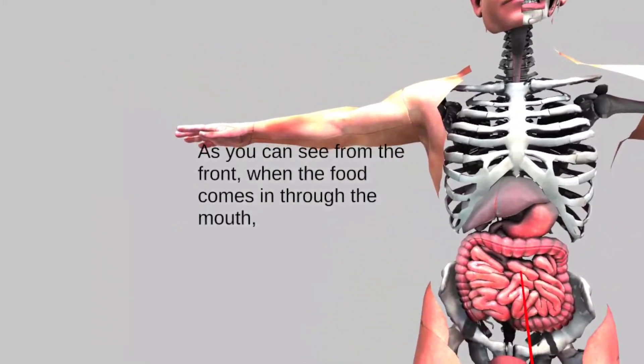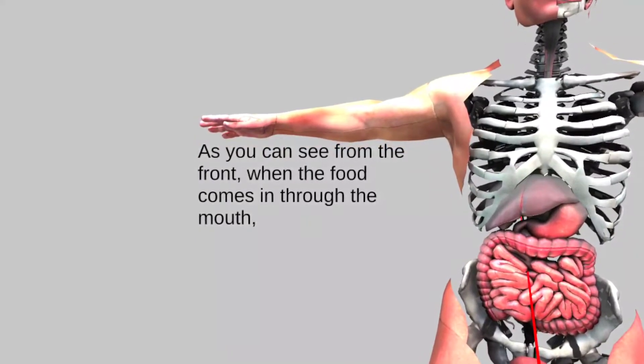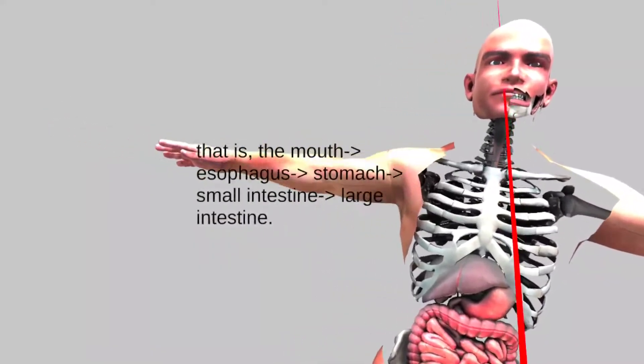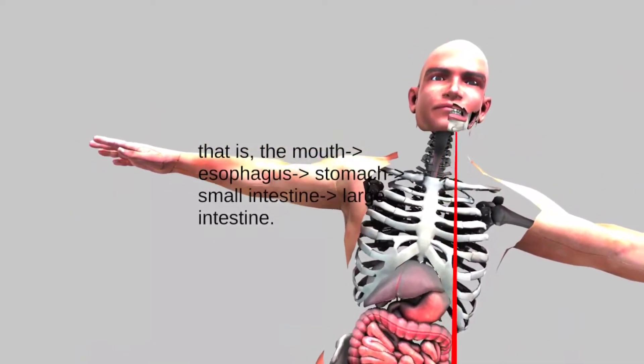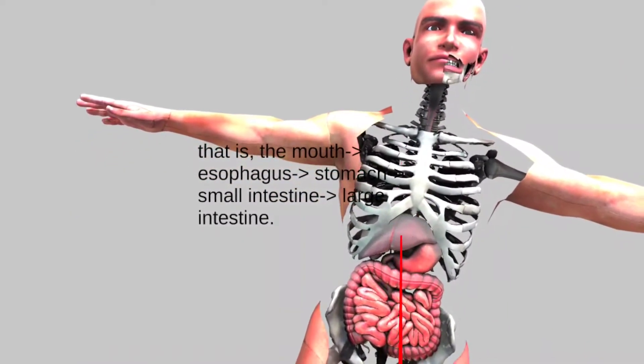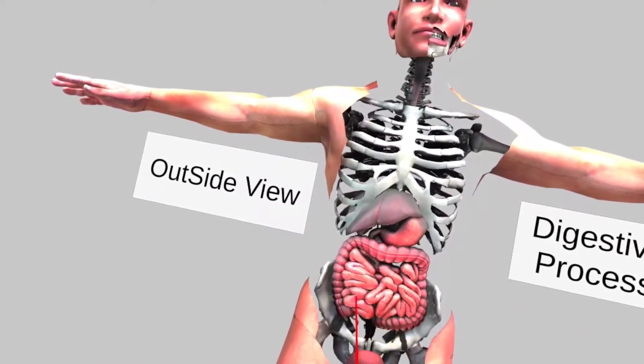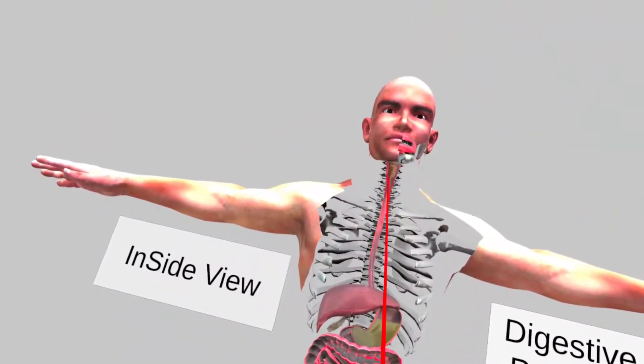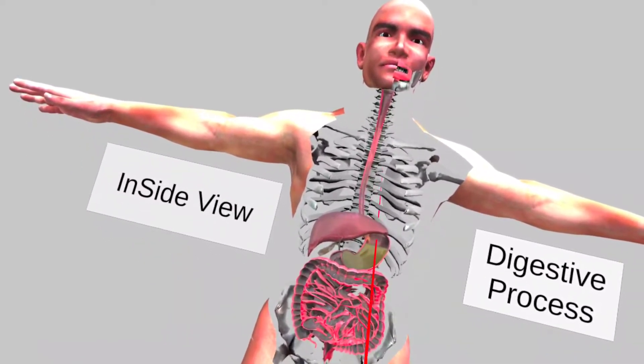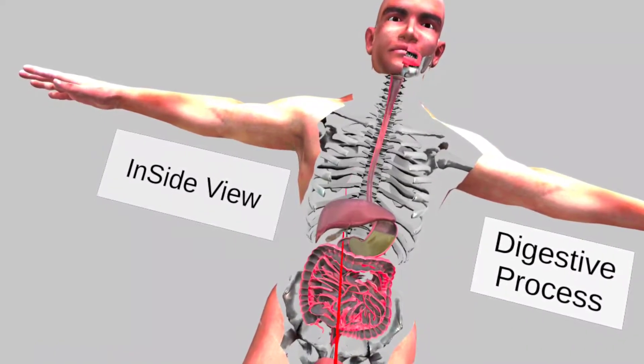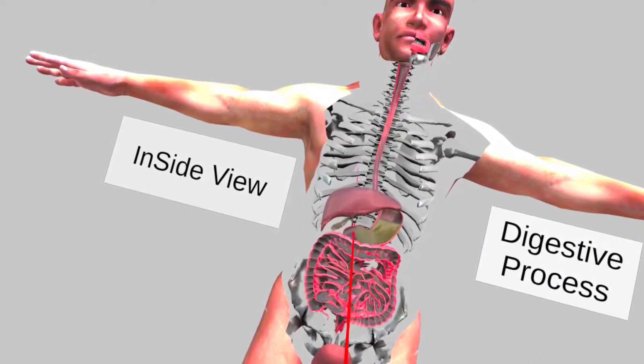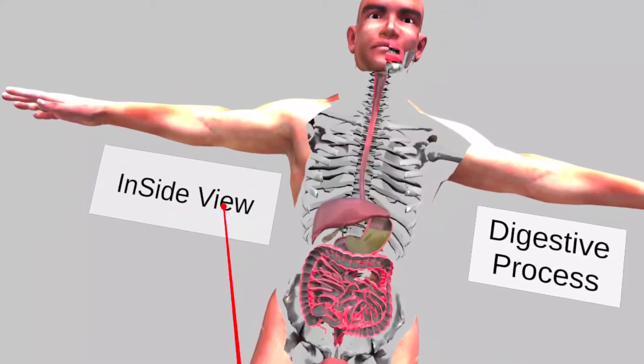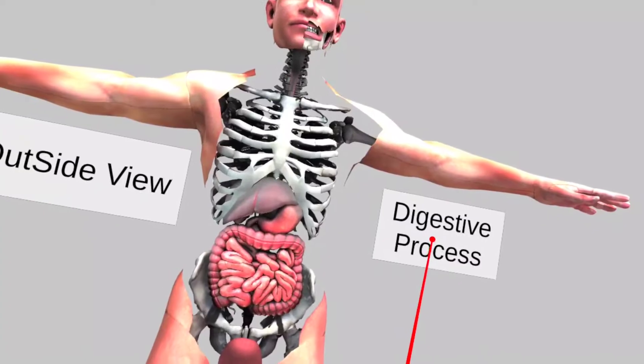As you can see from the front, when the food comes in through the mouth, the nutrients of the food are digested as they go through the digestive organs: the mouth, esophagus, stomach, small intestine, and large intestine.